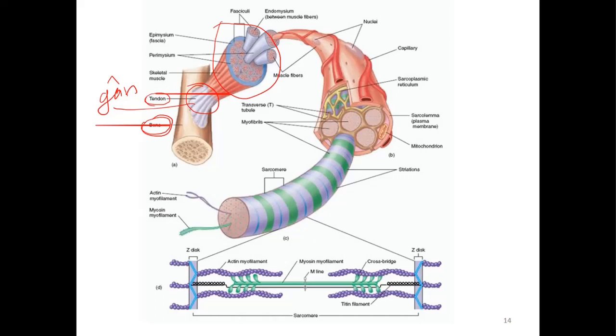So in our body, you can imagine here in my hand - this is a muscle. This muscle is one end connected to the bone here, the other end connected to the bone here. So the muscles are always connected to bone.